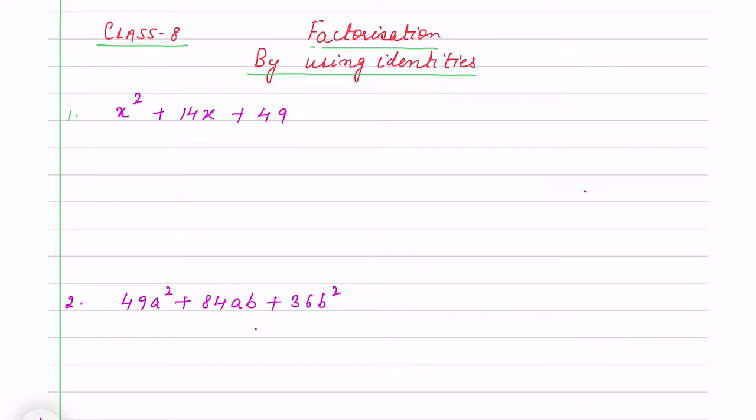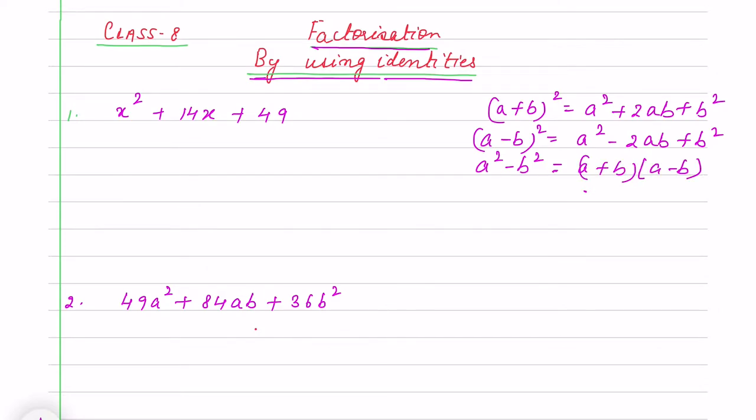Hello children, here we are starting factorization by using identities. You already know three identities: a plus b whole square, that is a² + 2ab + b²; a minus b whole square, that is a² - 2ab + b²; and a² - b² is (a+b)(a-b).